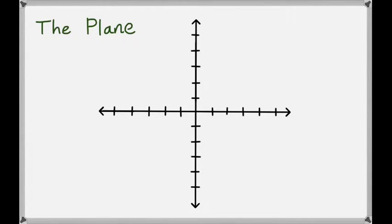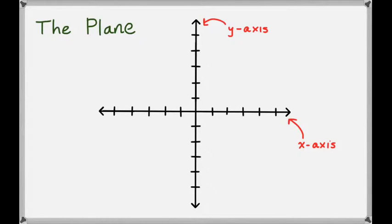This lesson is about plotting points in the plane. The plane has two axes. The horizontal line is the x-axis — you can think of this as a real number line. The vertical line is the y-axis, and this is another real number line. The plane itself is the two-dimensional surface that the x-axis and y-axis lay in, so you can think of the board itself as the plane.